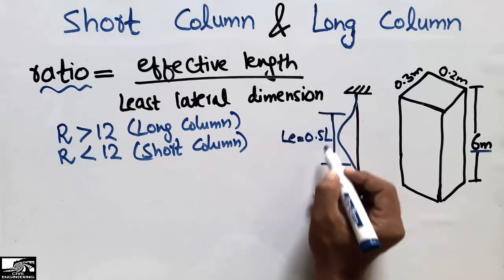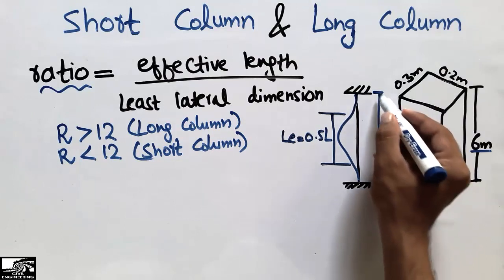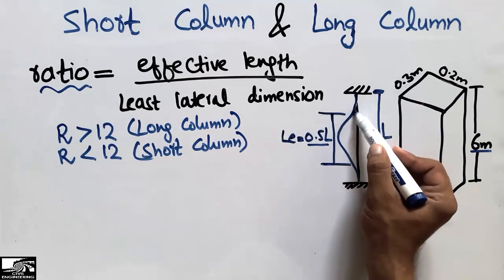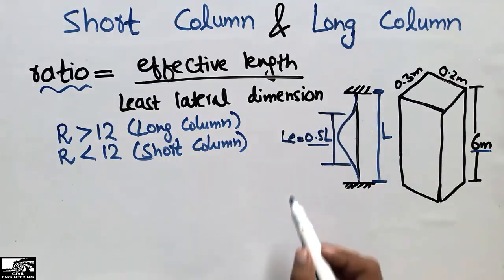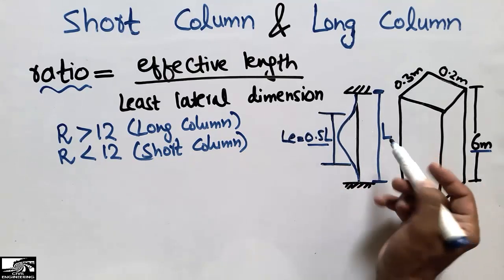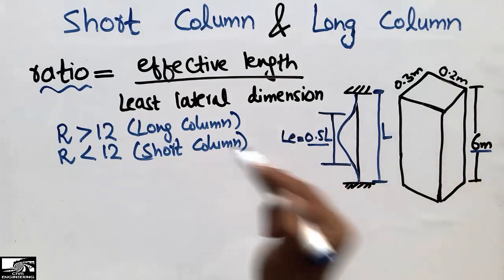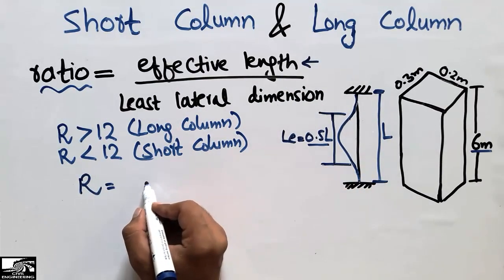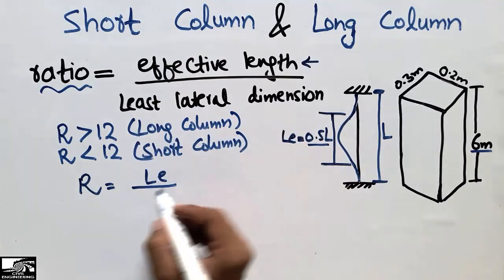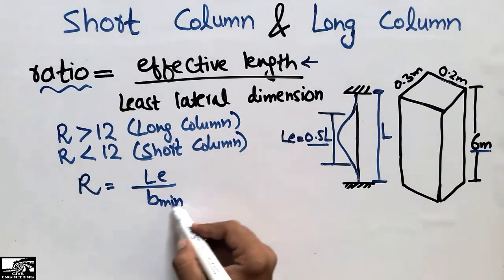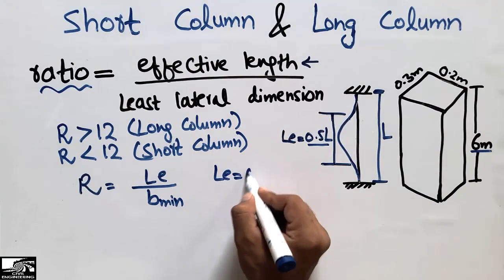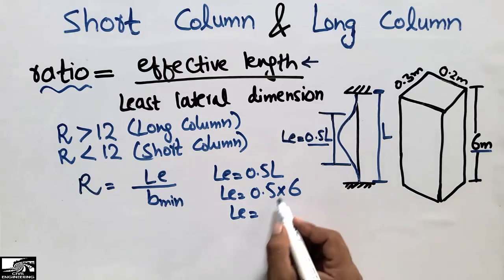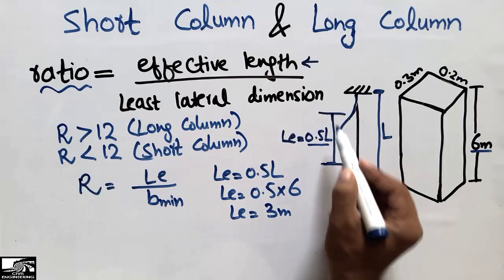For a fixed-fixed column, the effective length is equal to 0.5L, where L is the total length. This is because the effective length is where the slope changes from one form to another. So the effective length L_E = 0.5 × L. Since the total length of the column is 6 meters, the effective length = 0.5 × 6 = 3 meters.